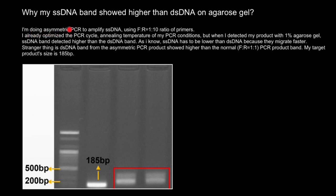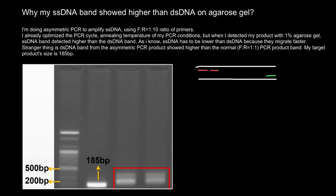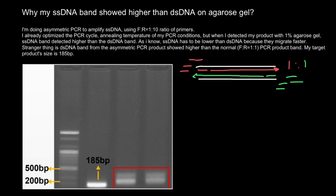The researcher is doing asymmetric PCR to amplify single-stranded DNA using a forward-to-reverse primer ratio of 1 to 10. Imagine that we are doing PCR. We start with double-stranded DNA, and we design a forward primer and a reverse primer. We use the forward primer to extend a new strand of DNA in the direction from the 5' end to the 3' end. In normal PCR, we use an equal number of forward and reverse primers — a ratio of 1 to 1.